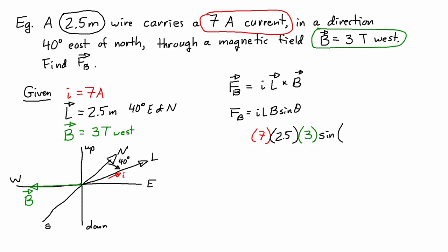The angle that you need to use is between L and B. The angle 40 degrees is between L and north. So this angle theta is actually equal to the 90 degrees, which is between west and north, plus 40 degrees. So theta is actually equal to 130 degrees.